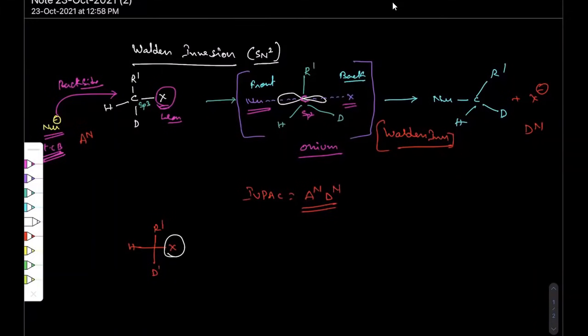No doubt, you may get the product. You can write the product R prime, H and D, and N. Then no doubt inversion in configuration can be observed.